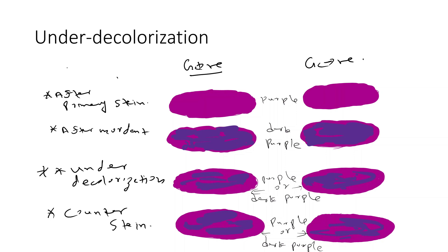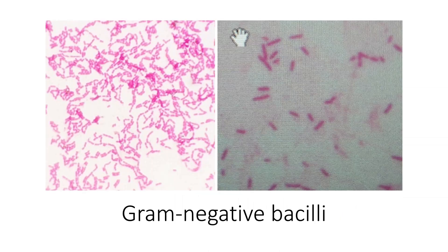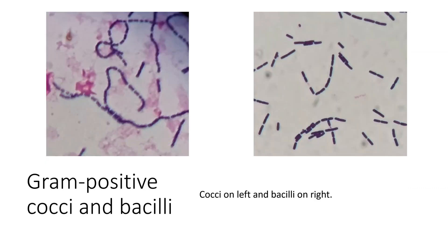Remember, decolorization is the most important step in gram staining. This picture shows gram negative bacilli; this one also shows gram negative bacilli. And here you can see a gram positive coccal chain, and these are gram positive bacilli — most likely Bacillus species, perhaps Bacillus cereus rather than Bacillus anthracis. So that is about the mechanism of gram stain.